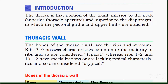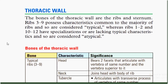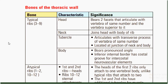The bones of the thoracic wall are the ribs and sternum. From rib number three to rib number nine, they are called typical ribs. Ribs one, two, ten, and twelve have specializations or are lacking typical characteristics, so they are considered to be atypical. Let's look at typical ribs first. Their characteristics include a head, neck, tubercle, and body.